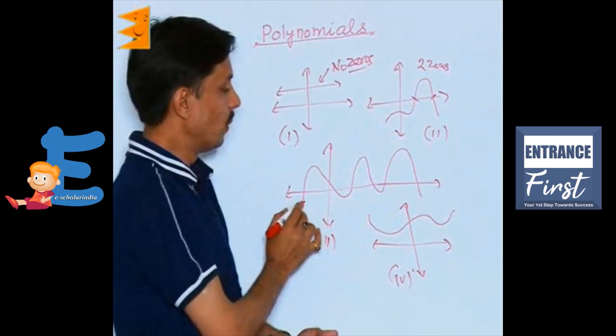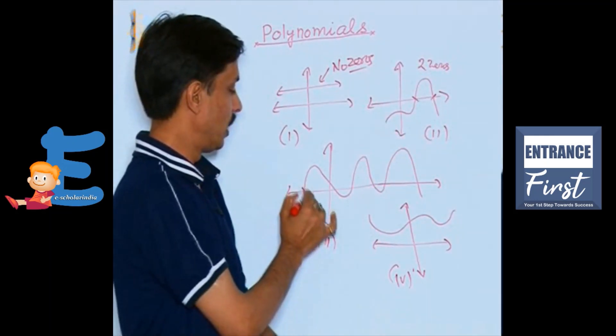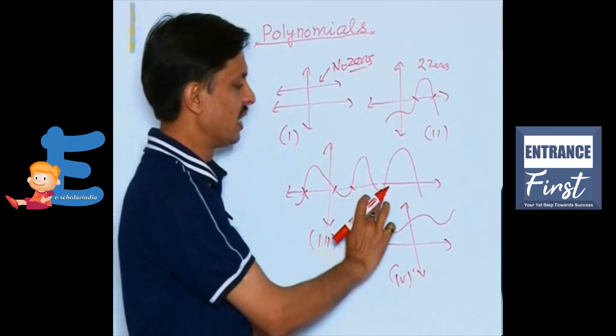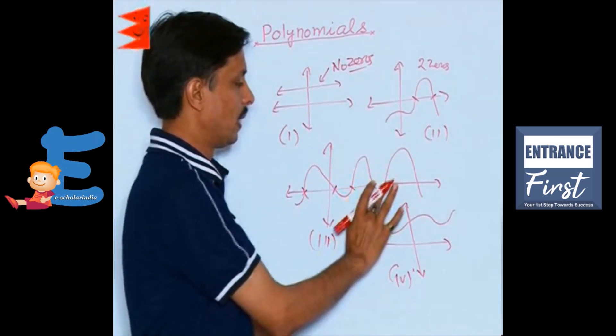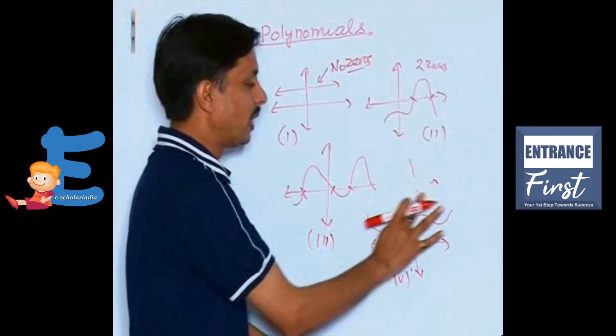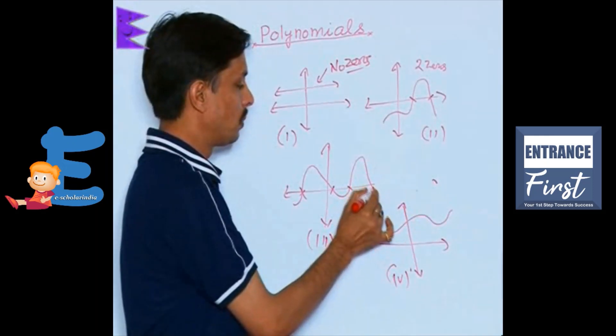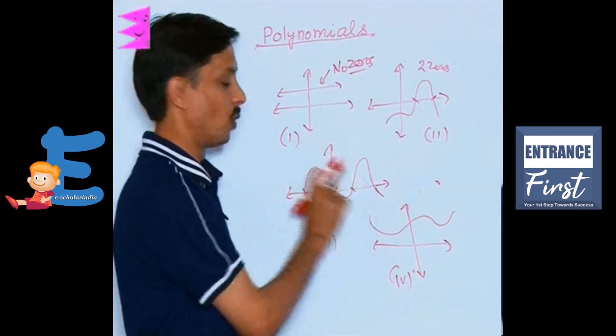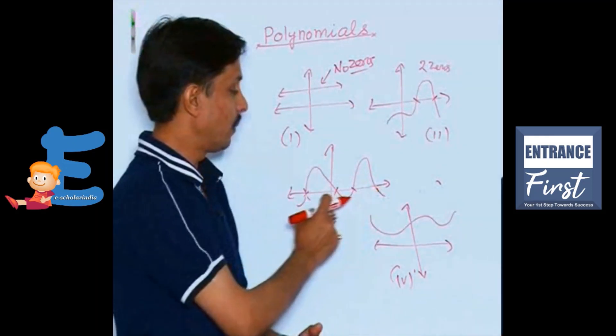If I tell you about the third, 1, 2, 3 and it is separated here like this. If I remove this part and you observe only this one, then you can notice 1, 2, 3, 4. It is intersecting it at four points, meaning the x-axis.